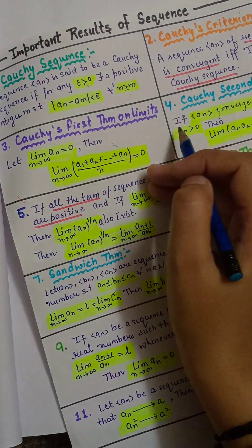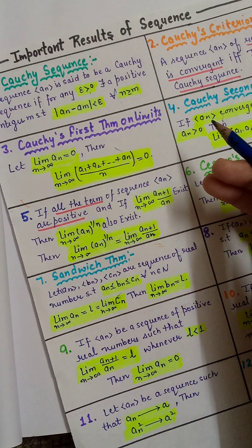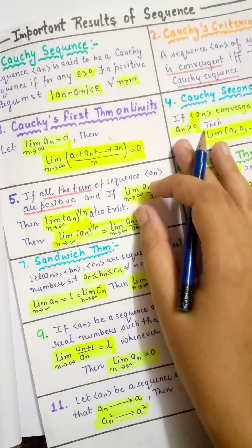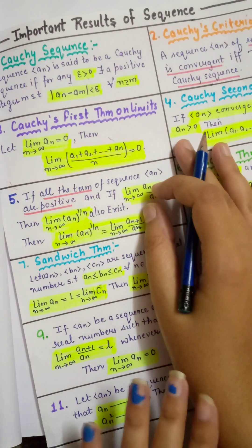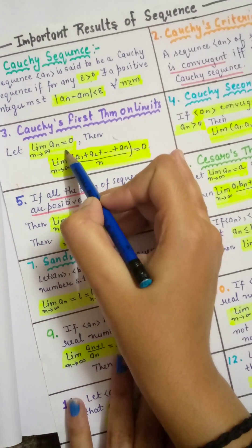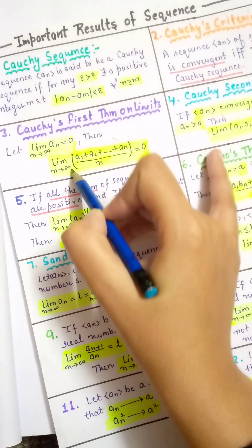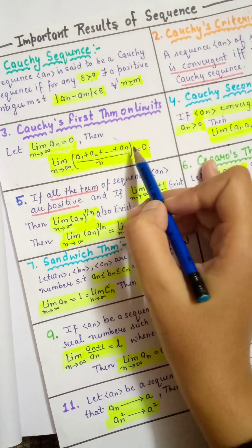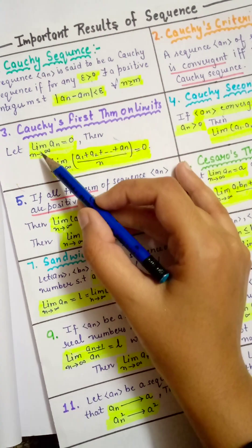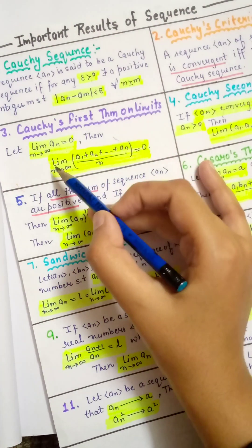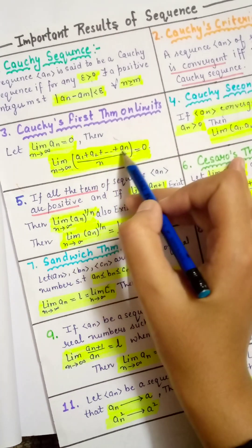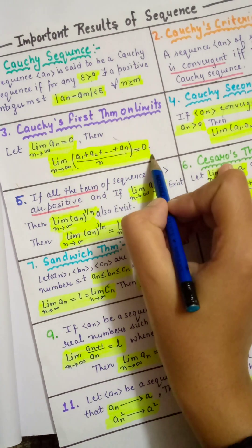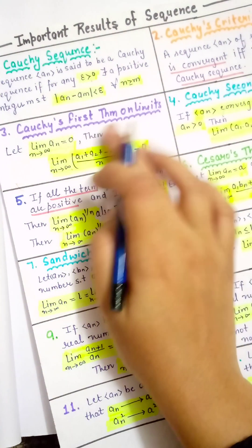Next, Cauchy's first theorem on limit. If limit n tends to infinity of AN equals 0, then limit n tends to infinity of (A1 + A2 + ... + AN) upon N also equals 0. This is called Cauchy's first theorem on limit.